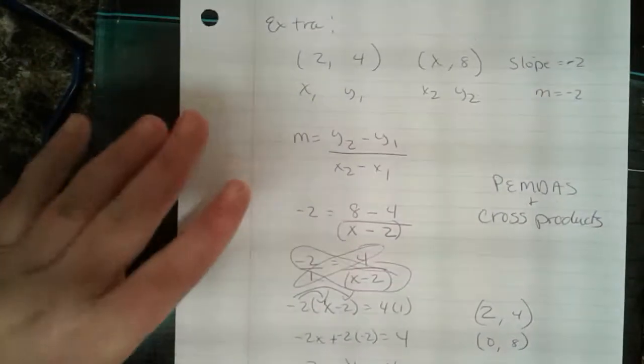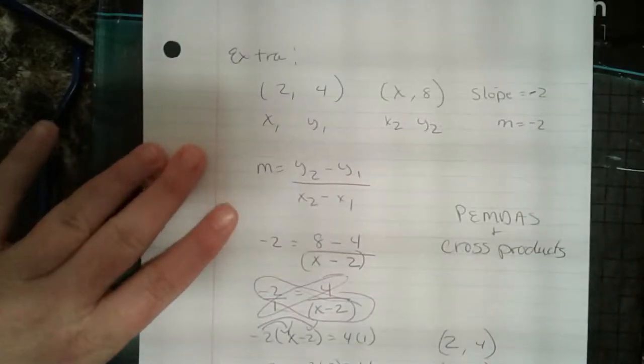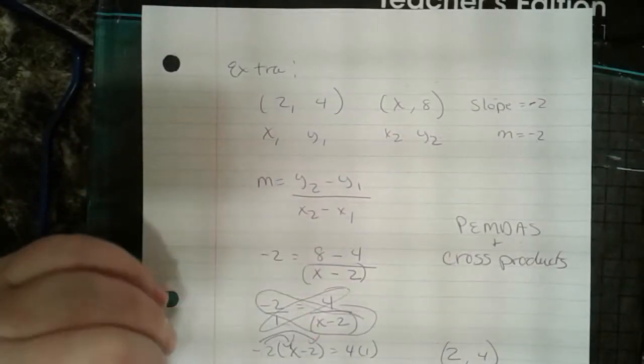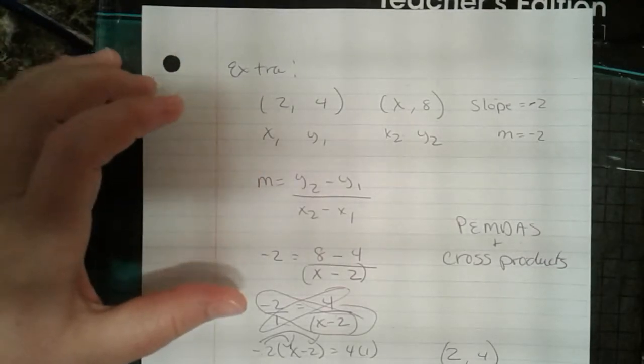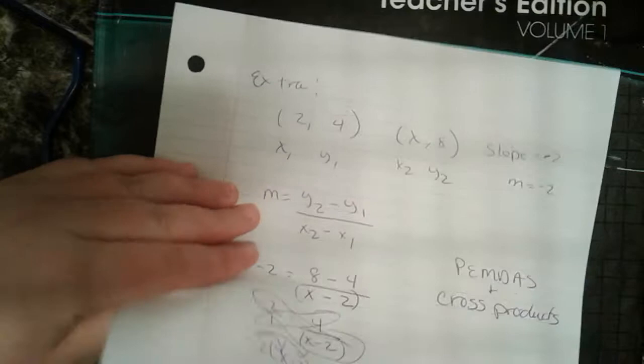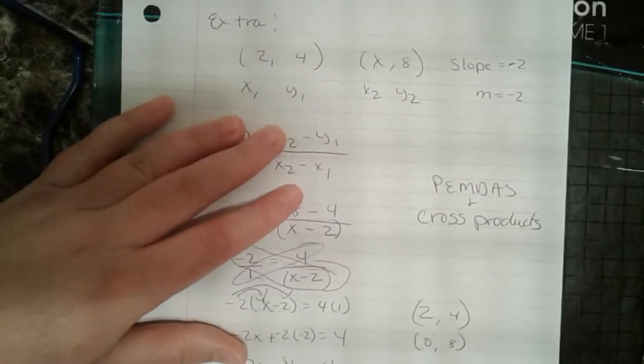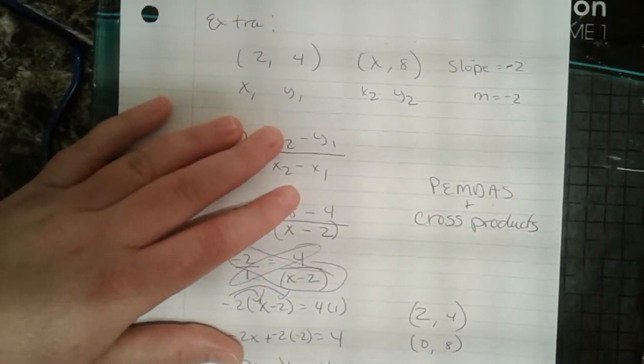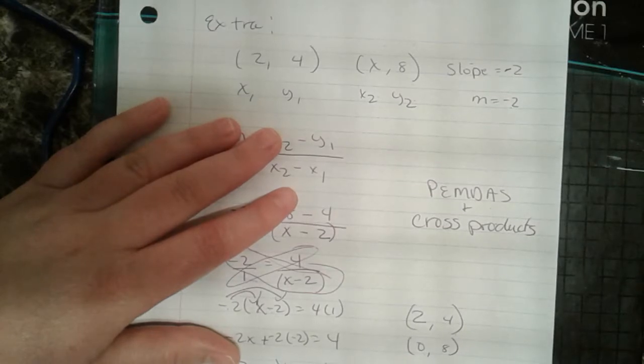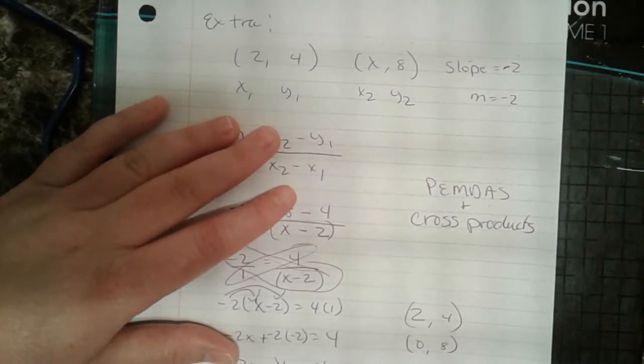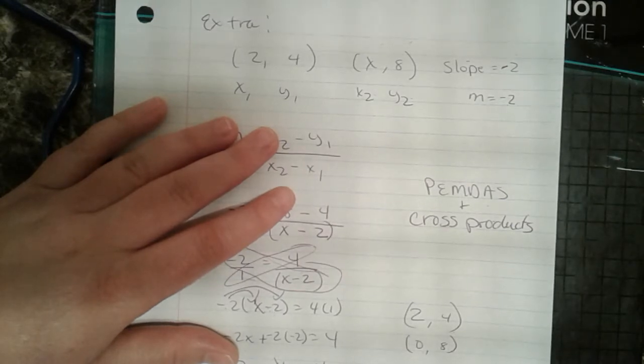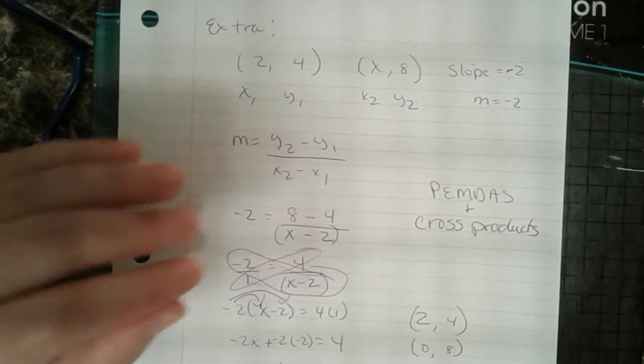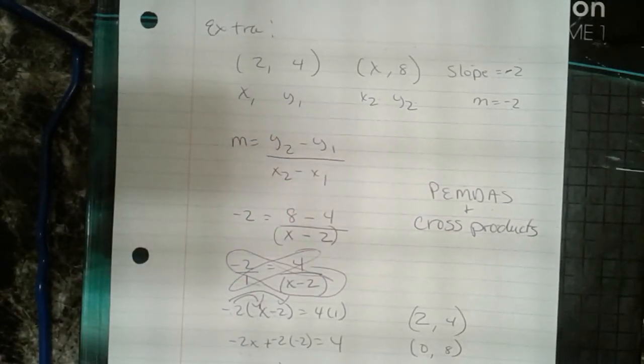So you have two problems like this on your homework. I want you to try it out. I want you to try it out. Do the best you can on it. And that concludes part 5, I think. Is it 5? Part, oops. Yeah, part 5 of lesson 5.1. Thanks, guys.